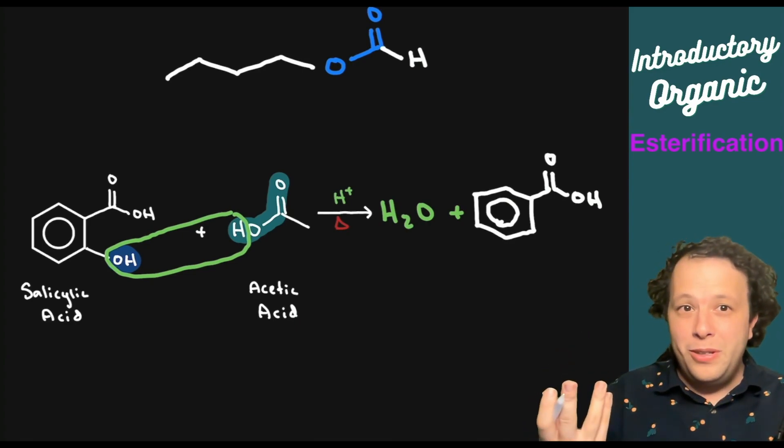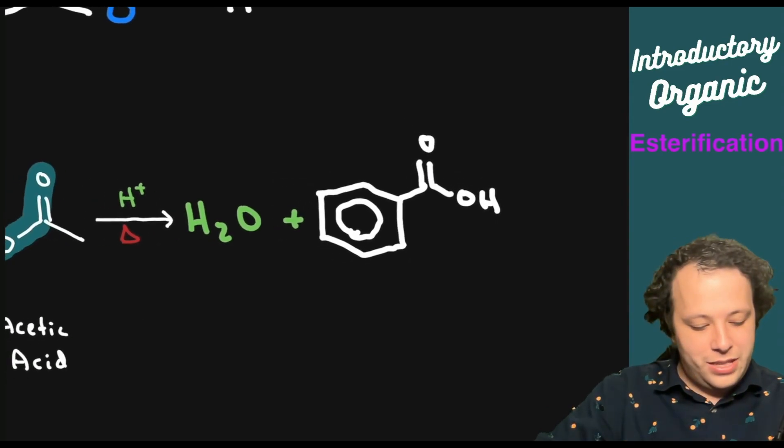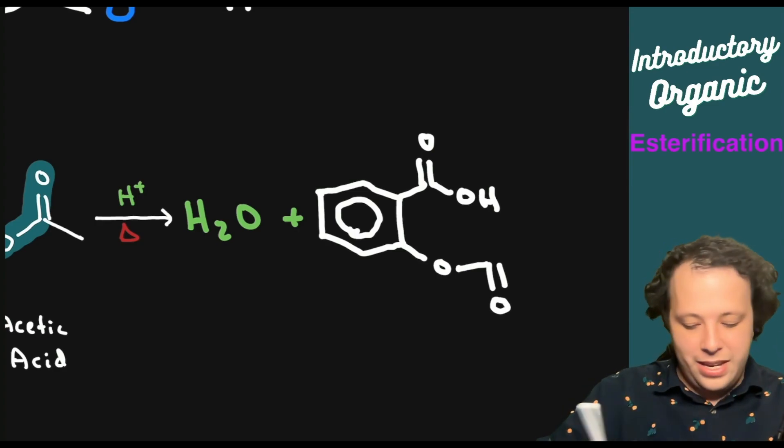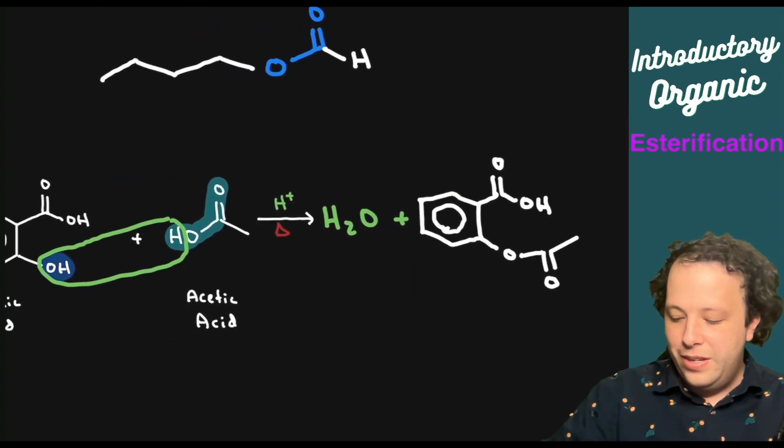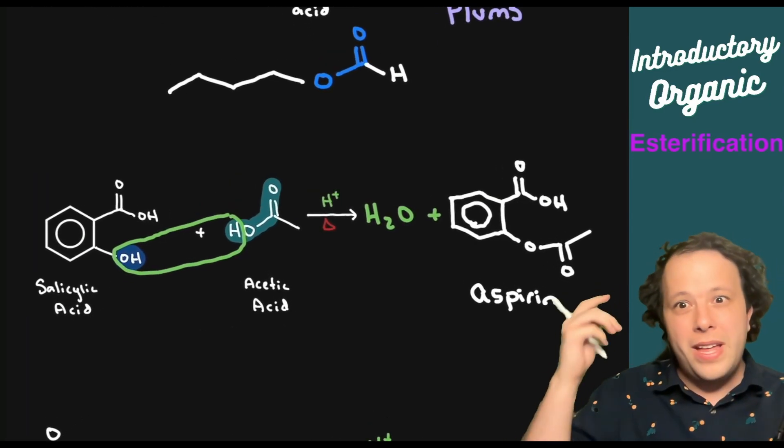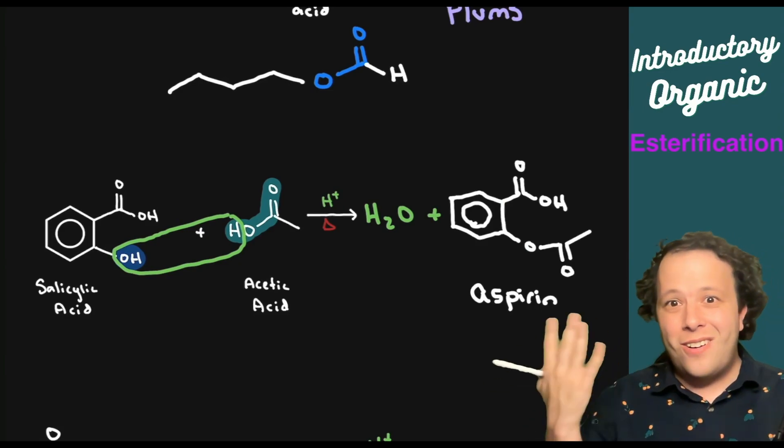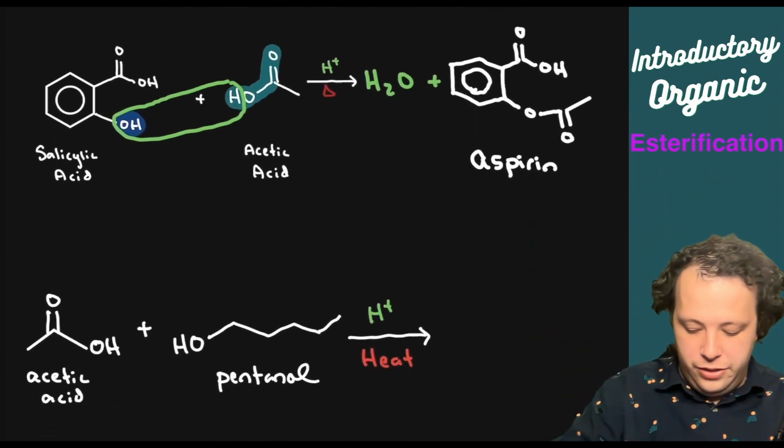We will draw our benzene ring, have our COOH on top. And then on the bottom, we're going to have another very similar looking thing, but instead it's going to be an ester. So we have RO connected to our double bond O, and then we had one carbon that is off just like so. So this is going to be aspirin or salicylic or methyl salicylic acid for this one. So this is our aspirin that we are going to be making.